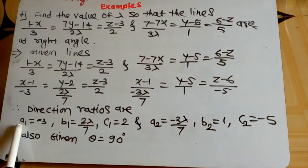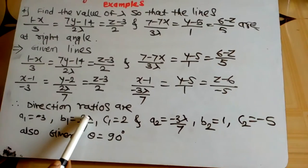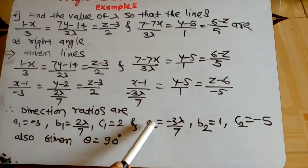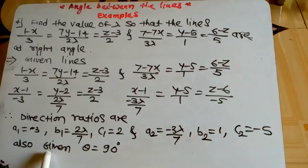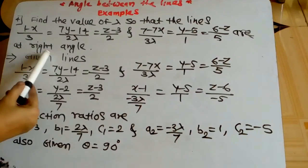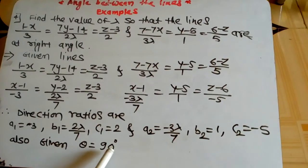Therefore, the direction ratios are: a₁ = -3, b₁ = 2λ/7, c₁ = 2; a₂ = -3λ/7, b₂ = 1, c₂ = -5. Also given, the lines are at right angle, that means θ = 90°.